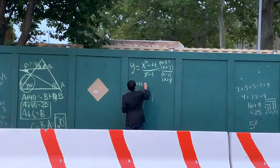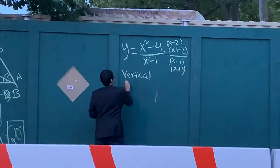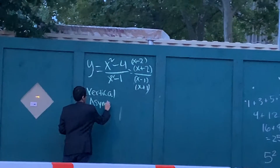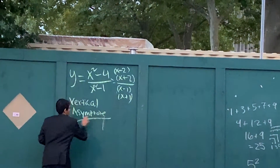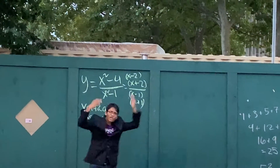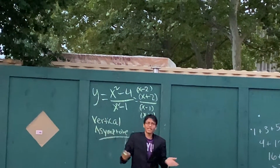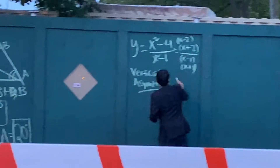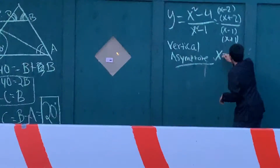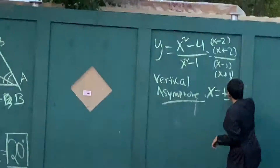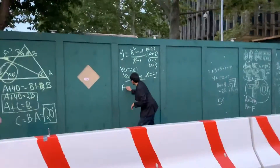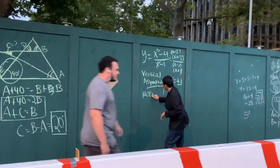How do we find a vertical asymptote? A vertical asymptote exists if the function is undefined. A function is undefined when the denominator is 0 — that is, when x is equal to plus or minus 1 for this function.